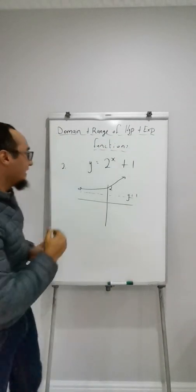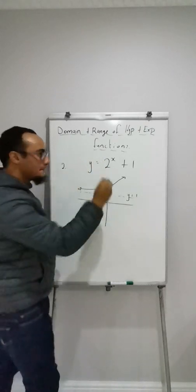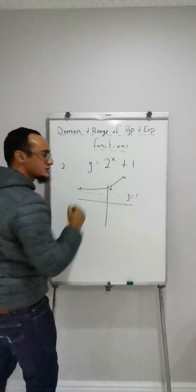In this example, I have an exponential graph y is equal to 2 to the power of x plus 1. What's my asymptote over there? It is positive 1.